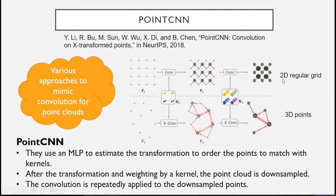One example of mimicking convolution for point clouds is PointCNN. Here, convolution on a 2D regular grid is demonstrated versus PointCNN's approach for 3D points. They use an MLP to estimate a transformation that imposes an ordering — in a 2D regular grid there is a natural ordering, but in 3D point clouds you predict the order using a transformation in the network. Once you order these points, you can match the kernel with the ordered local point cloud, apply the kernel, and perform convolution. After that, you get a single feature from these points and apply down-sampling, repeating convolution on the down-sampled points.